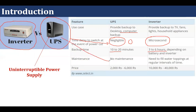Within UPS, a dry cell has been used, so in-between maintenance is not required. After some time, when battery life is dead, you have to replace the battery, but within that duration maintenance is not required. Whereas in case of inverter, we are using a lead-acid battery, so regular maintenance is required. UPS is a smaller system, so obviously its price is less than the inverter system.